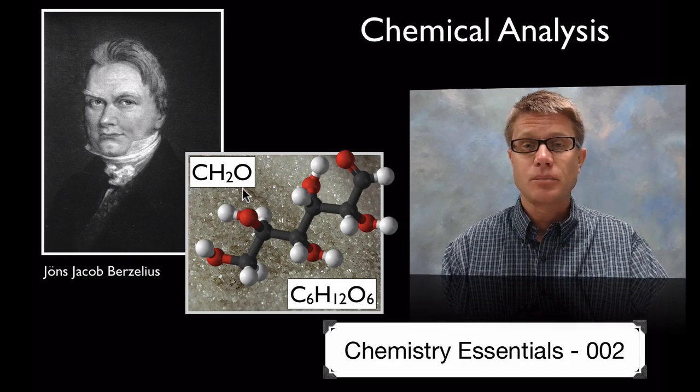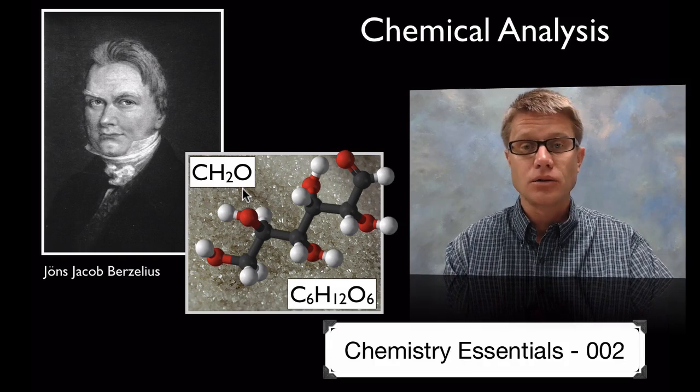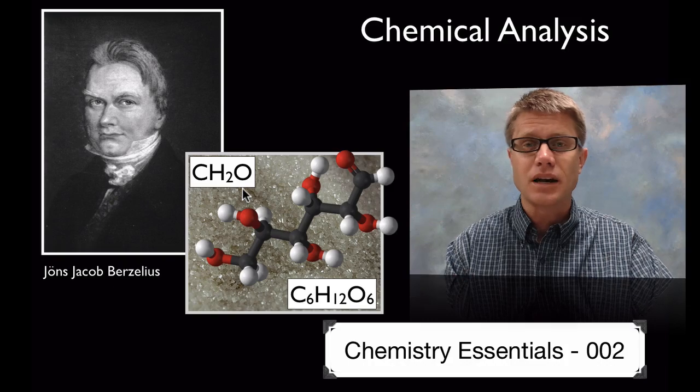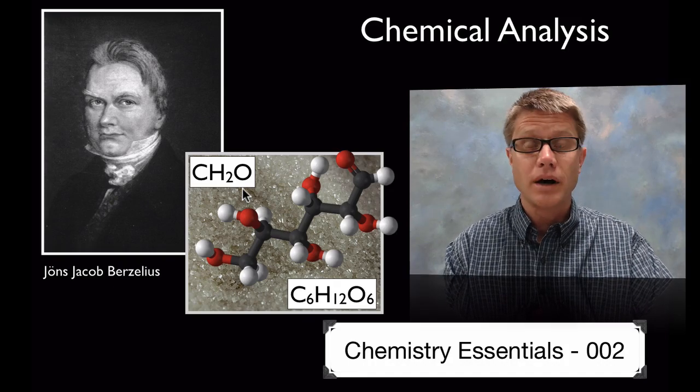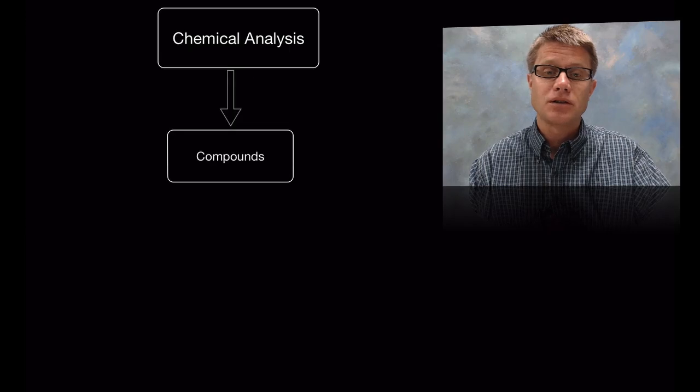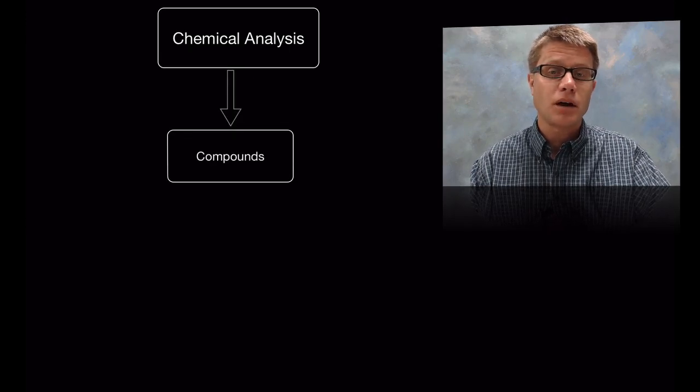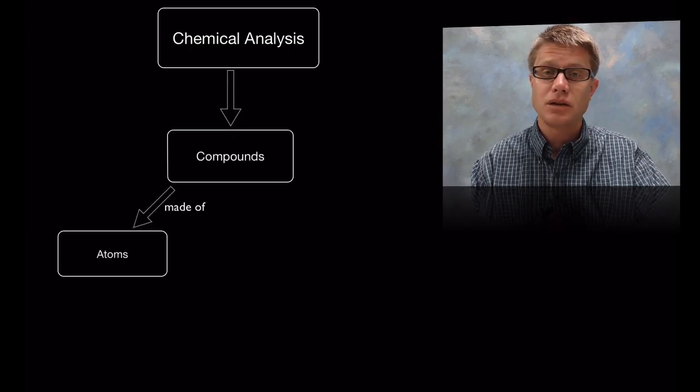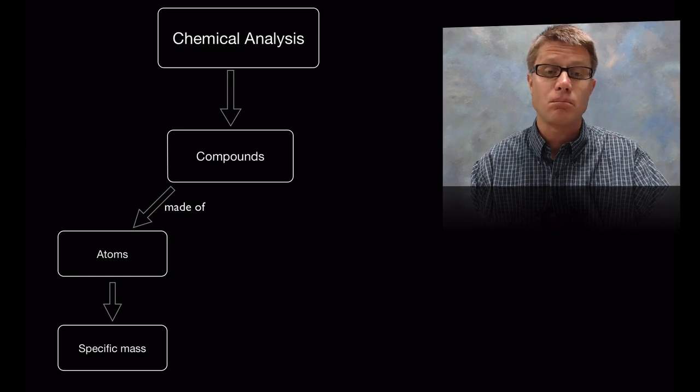But chemical analysis is simply looking at a compound like glucose for example, figuring out what's in there, how much of that what, and then how it's all connected together. And so in chemical analysis we're looking at compounds, and remember compounds are going to be made up of atoms and each of those atoms have a specific mass.